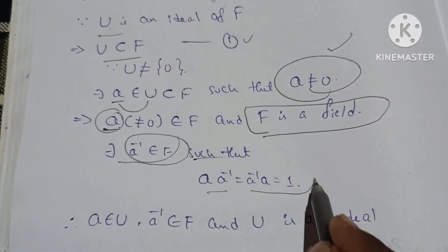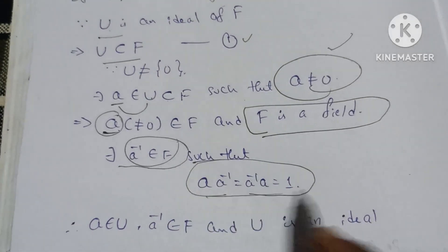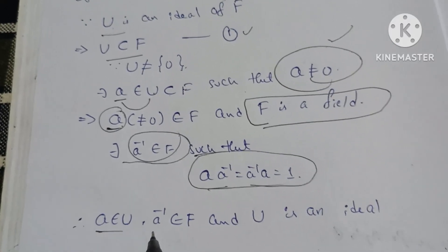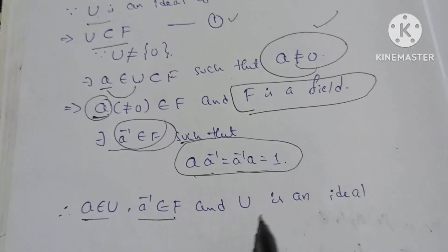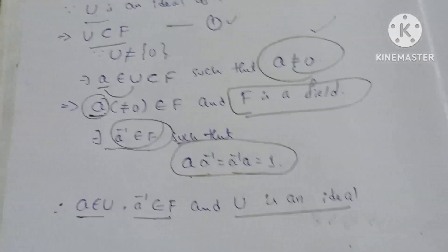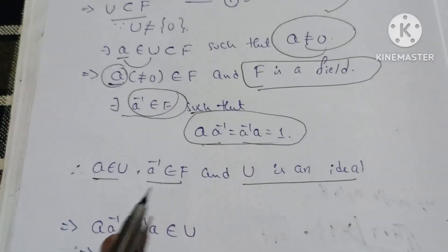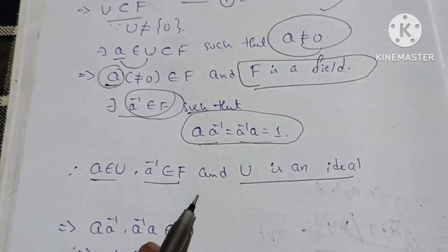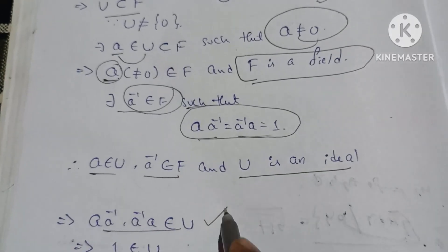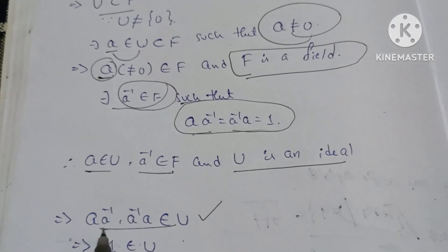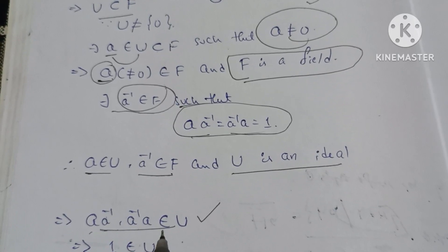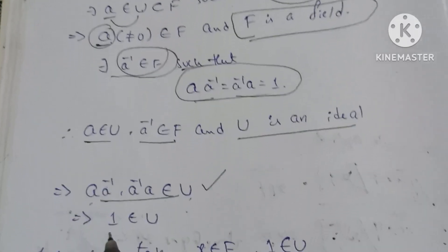Since a belongs to F and F is a field, a-inverse also belongs to F. Since U is an ideal of F and a belongs to U, we have a times a-inverse belongs to U. Therefore, 1 belongs to U.